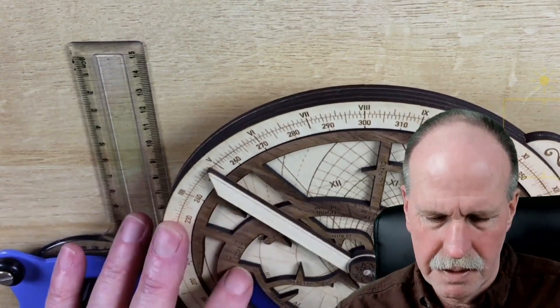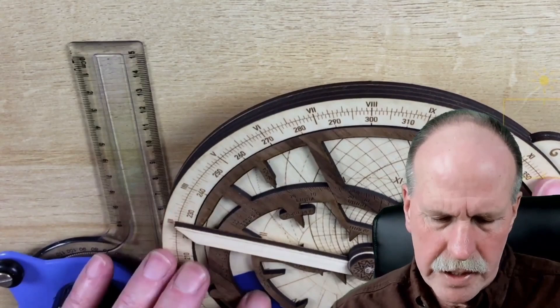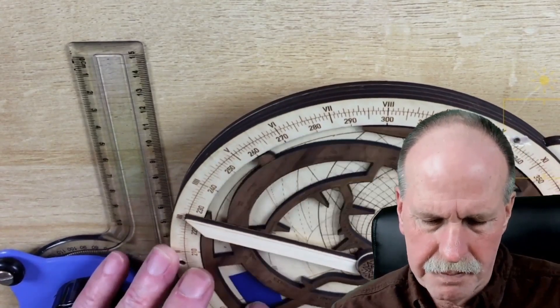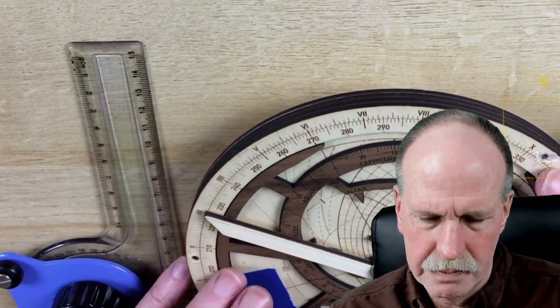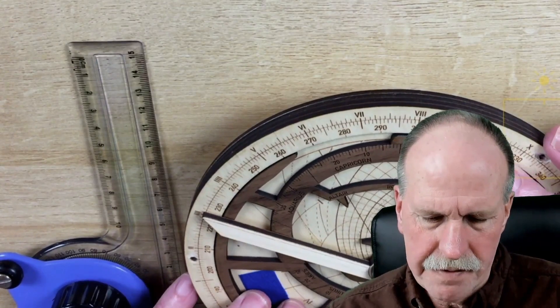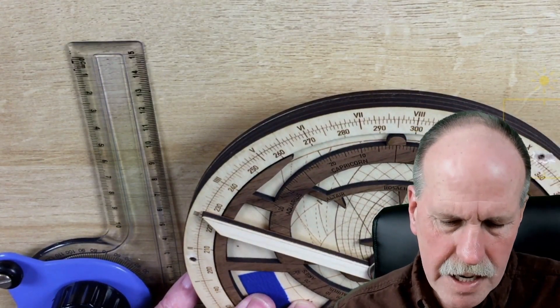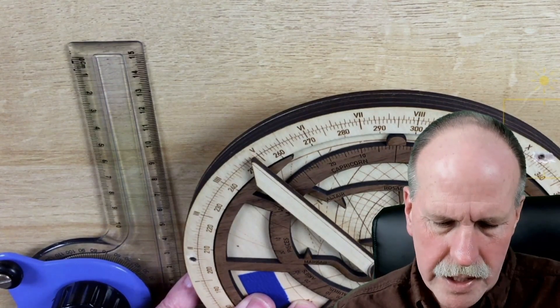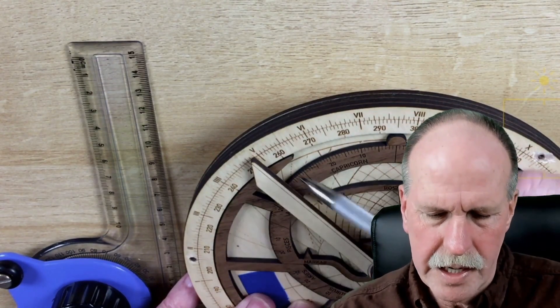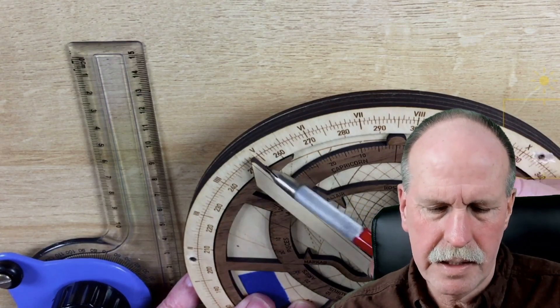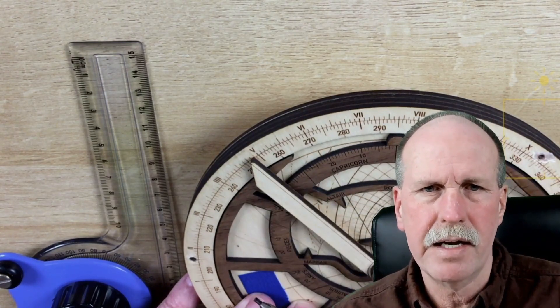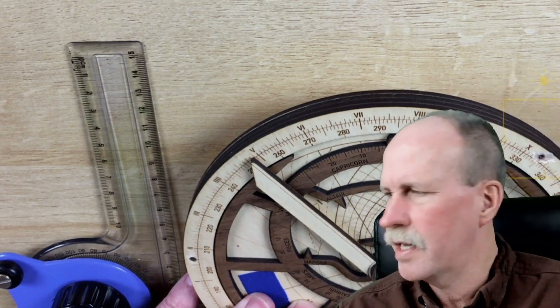So once again we're going to go to Aquarius and it's going to be the seventh day of Aquarius and we're going to find the time of astronomical twilight. We line it up with the 18 degree dotted line and we get just before 5 a.m. So it's going to be about 5:50 a.m.